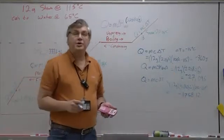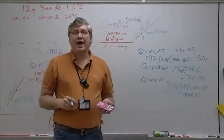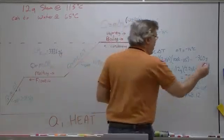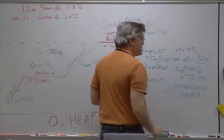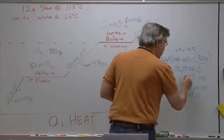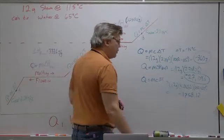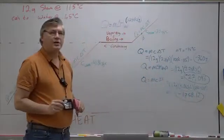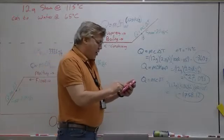So I kept all the significant figures because I'm only going to round after I have added them all up. So now I have three numbers here. This is for the cooling of the steam. This is for the phase change, the condensation of the steam into liquid form. And this is the cooling of the liquid down to its final temperature. I'm going to add all of these up.